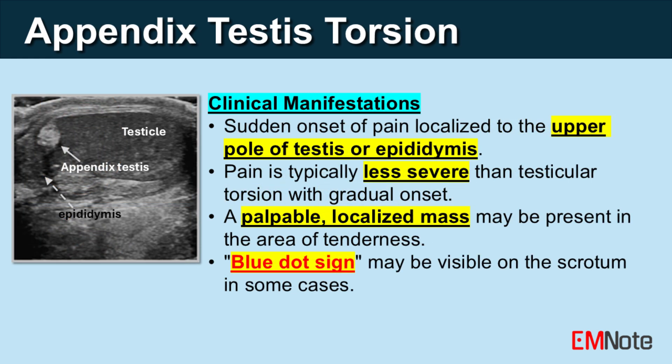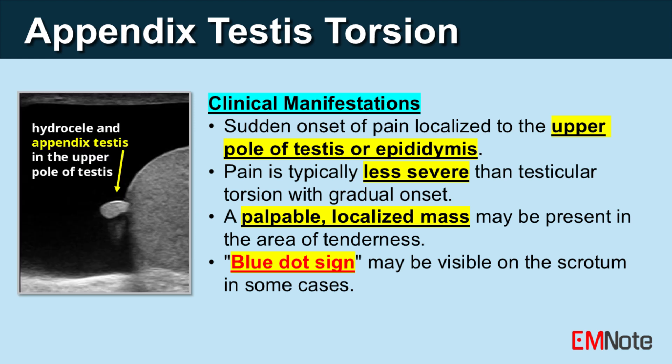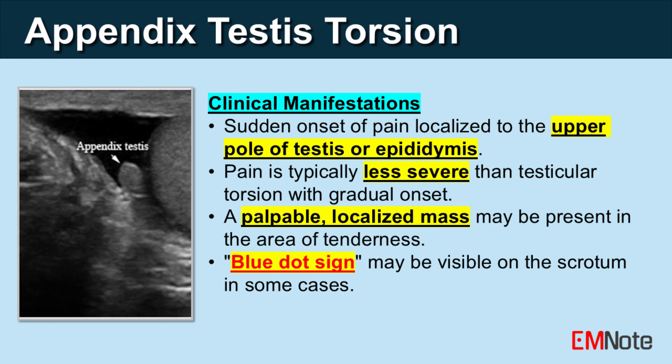Clinical manifestations. The most prominent symptom is a sudden onset of pain localized to the upper pole of the testis or epididymis. This pain may be similar to, but less severe than, testicular torsion, and its onset is typically more gradual. A palpable, localized mass may be present in the area of maximum tenderness.